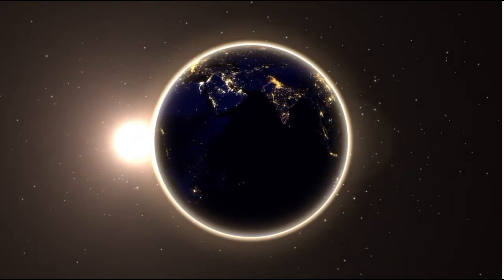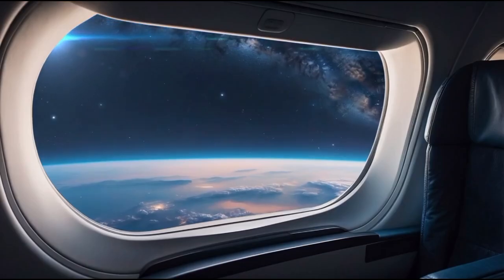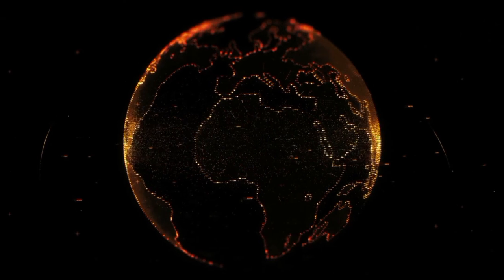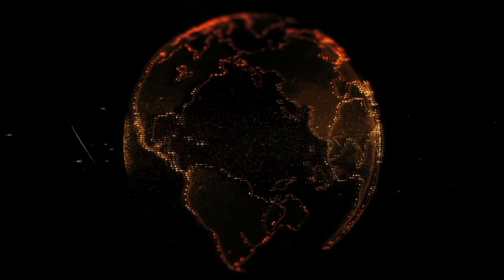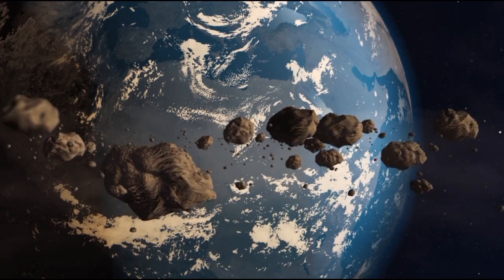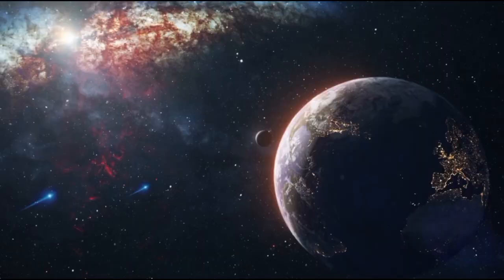For instance, one day on Proxima b lasts an astonishing 11 Earth days. Imagine sunrises that unfold slowly heralding a new day, followed by extended sunsets stretching into golden hours that photographers dream of. While this might sound like a dream come true, it poses intriguing questions about the planet's climate and habitability.